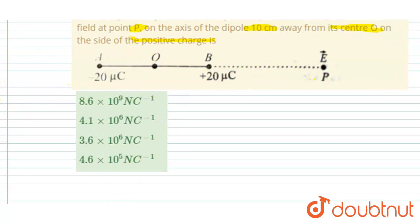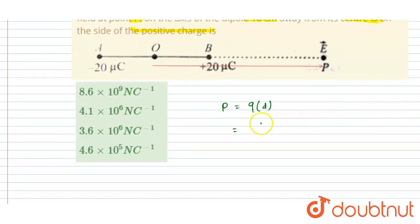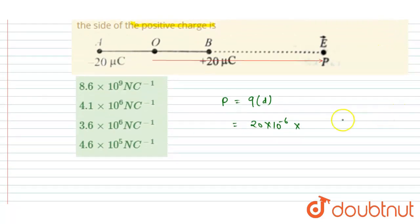So let us first find out the dipole moment because of these two charges. So I will write the dipole moment is equals to q into distance between the two charges. Right, so the charge here, it is given that it is 20 microcoulomb, so I will write 20 into 10 to the power minus 6, and distance between the two charges is 10 mm, right? So I will write 10 into 10 to the power minus 3.